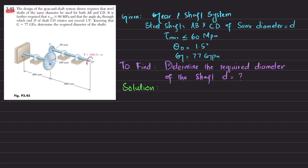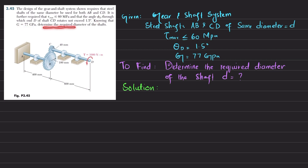Welcome back. Problem 3.45: the design of a gear and shaft system requires that the steel shafts be of the same diameter for both shafts A-B and C-D. The maximum allowable shearing stress must be less than or equal to 60 MPa, and the angle through which end D rotates must not exceed 1.5 degrees. G is 77 GPa. Shaft A-B and shaft C-D are connected through gears B and C. At end D there is an applied torque of 1000 N·m. Determine the required shaft diameter.